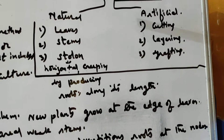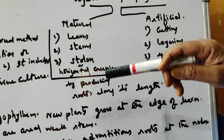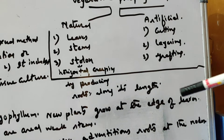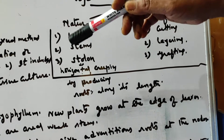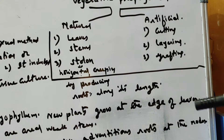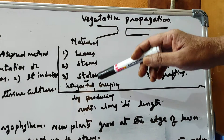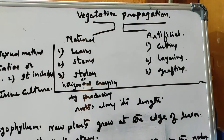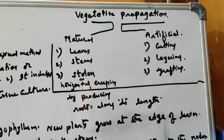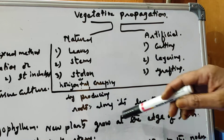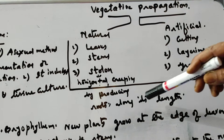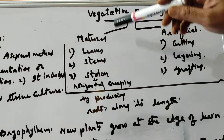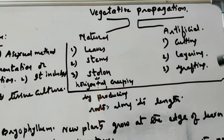First, under natural propagation, it includes leaves, stems, and stolons. Stolons are horizontal creeping stems that produce roots along their length. In our kitchen gardens and backyards we can see plants like chrysanthemum and mint that creep horizontally in the soil and produce small adventitious roots. From the nodes where adventitious roots form, new plants will grow.